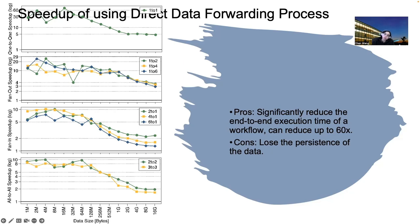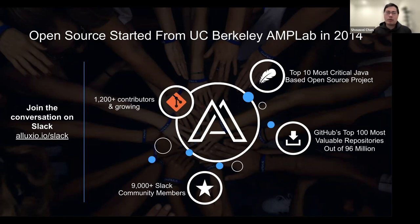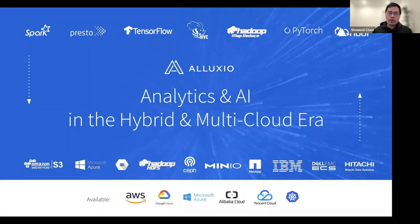That covers the experiments addressing data locality questions. I'll now pass it to Sho Wei, who will talk more about open source solutions and tools. Thank you Chen. In the following session, we want to give some ideas about how you can implement a real system with Alluxio. Let me give a basic introduction about what Alluxio is and what it is for. Alluxio is a new layer between compute and storage.